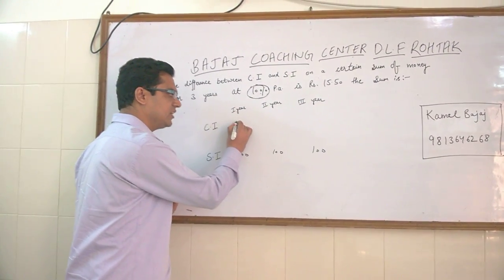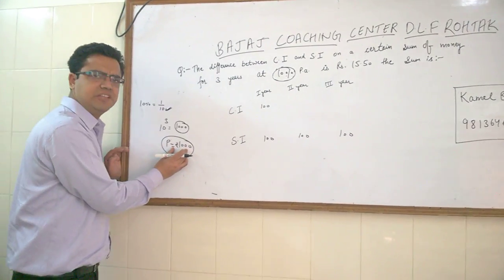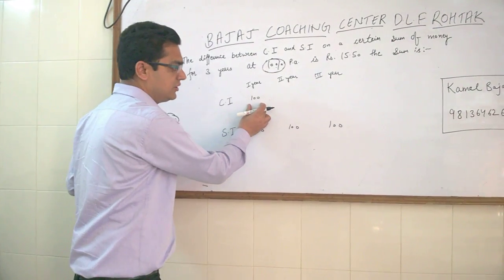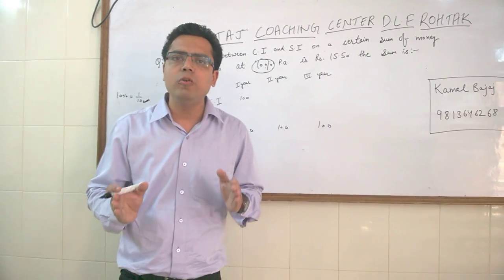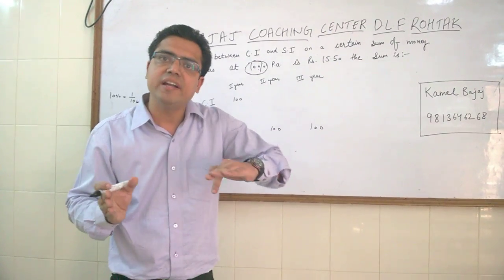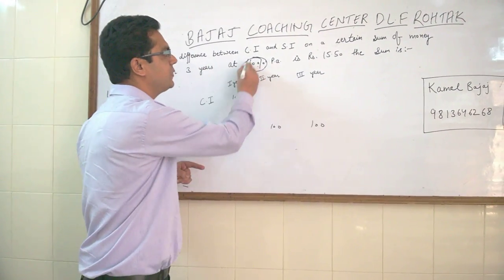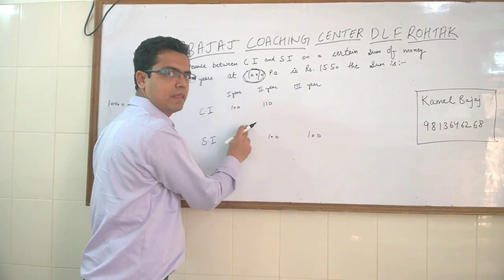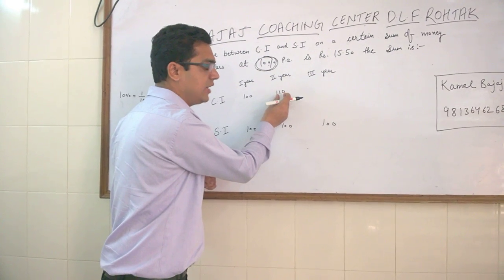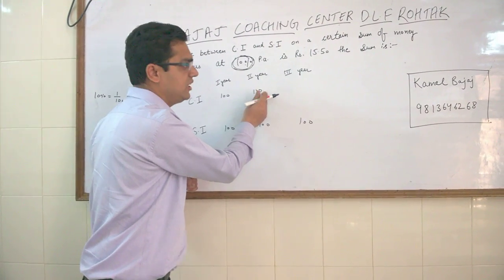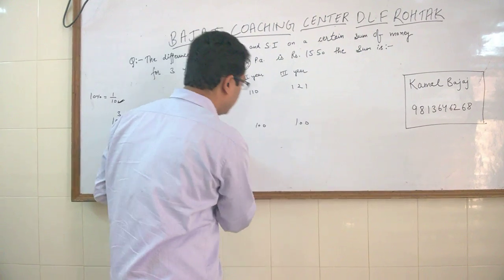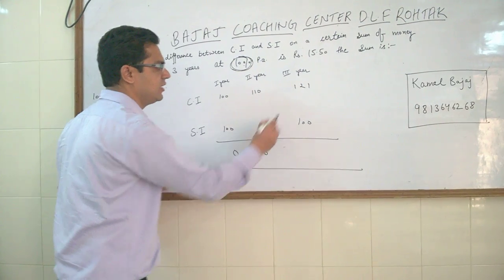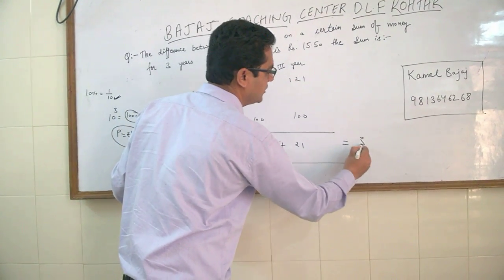For the 1st year, the compound interest is calculated on principle: 10% of 1000 is 100 rupees. Now this is the logic of compound interest — that compound interest increases at the same rate given in the question. The rate is 10%, so for the next year the compound interest will be 110, and 10% of 110 is 11, so 110 plus 11 is 121. Now the differences: for the first year the difference is 0, for the second year the difference is 10, for the third year the difference is 21. Total difference is 31.